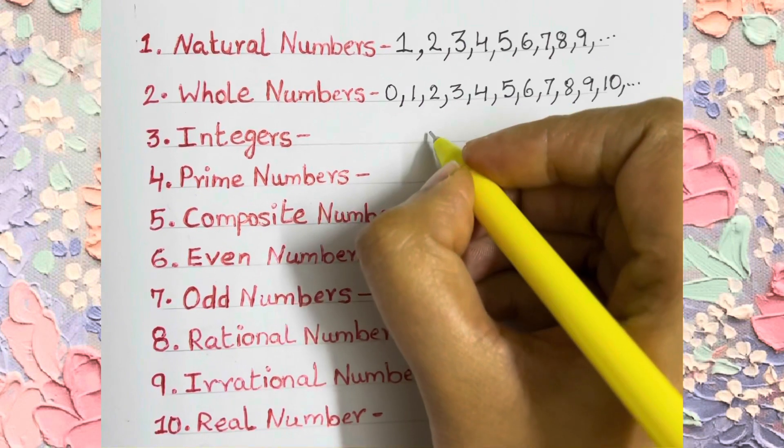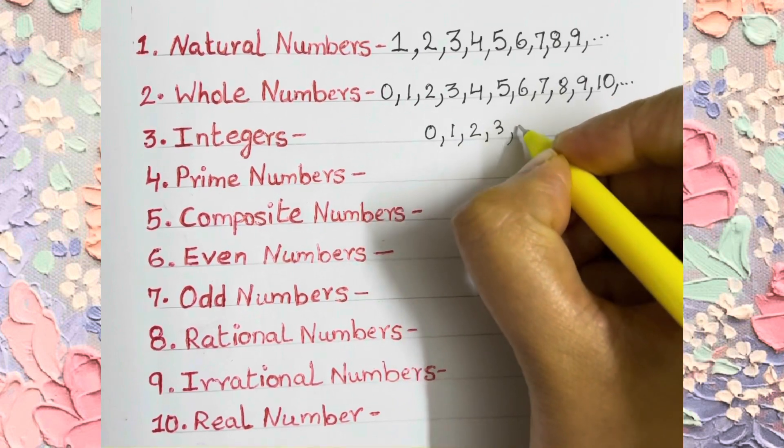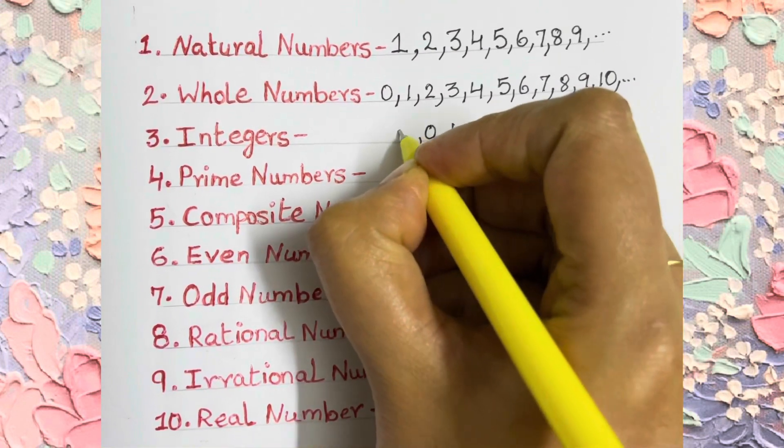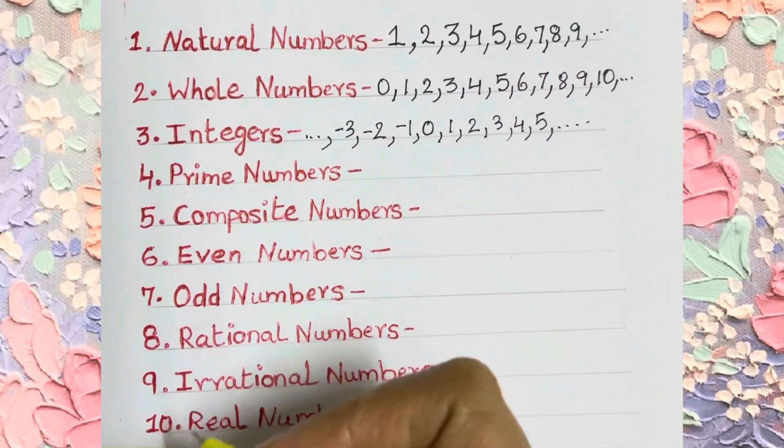And now we are going to use symbols in the numbers, so we have introduced the whole new world of positive numbers which are written after 0 and the whole new world of negative numbers which comes before 0. So they are called integers.